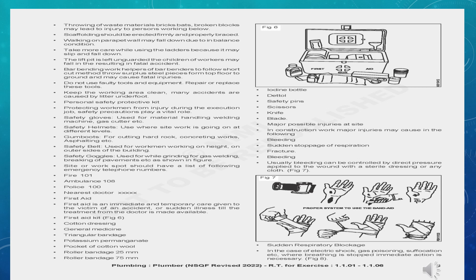First aid is an immediate and temporary care given to a victim. The first aid kit should contain: cotton dressing, general medicine, triangular bandage, potassium permanganate, roller bandage 25 mm, roller bandage 75 mm, iodine bottle, dead tote, safety pins, scissors, knife, and blade.